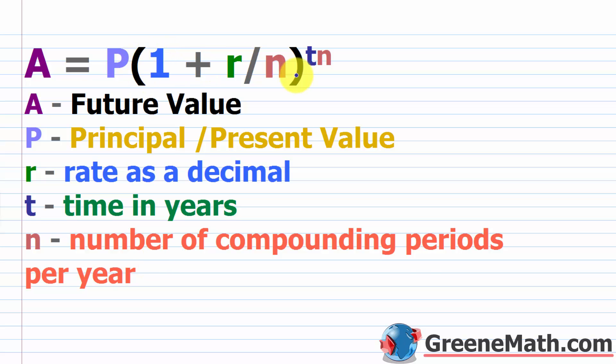And this guy inside the parentheses is raised to the power of T, which is the time in years, times N, again, the number of compounding periods per year.